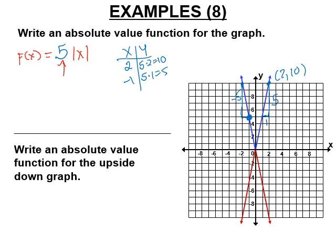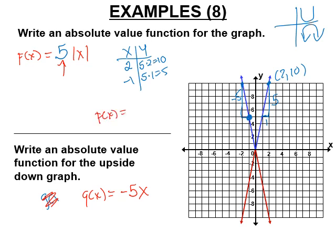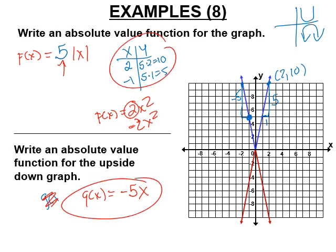Now we flip it upside down — just like we did with parabolas. To flip a function down, you make the leading coefficient negative. So g(x) = -5|x|. The same rule applies here as with parabolas: making the coefficient negative reflects the graph across the x-axis. You can verify this with a table of values.